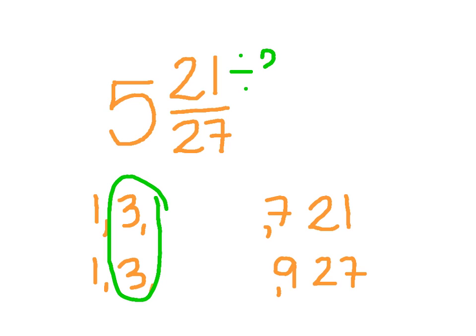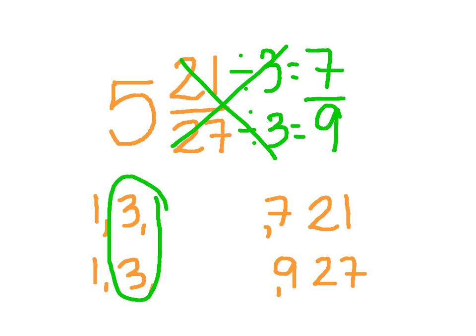I divide 21 by 3, and I get 7. And then I divide 27 by 3, and I get 9. So my new fractional piece is going to be 7 ninths. Don't forget your whole number, though. Your full answer is going to be 5 and 7 ninths.